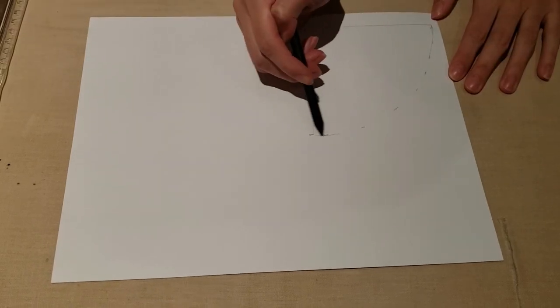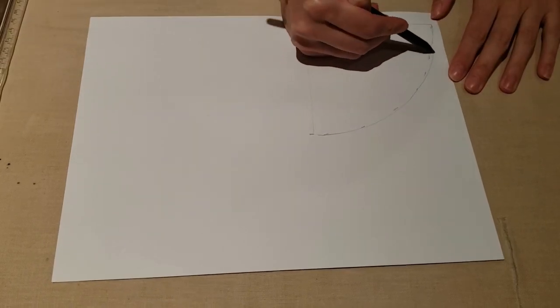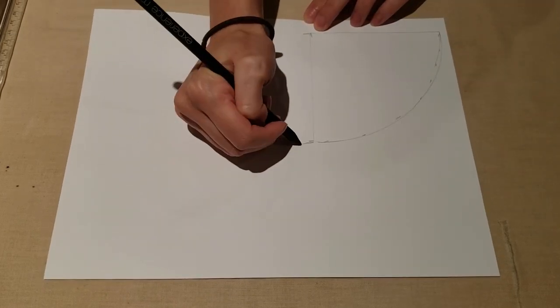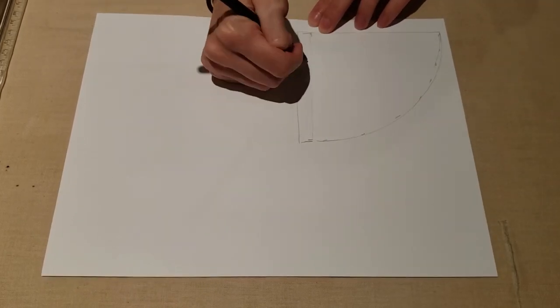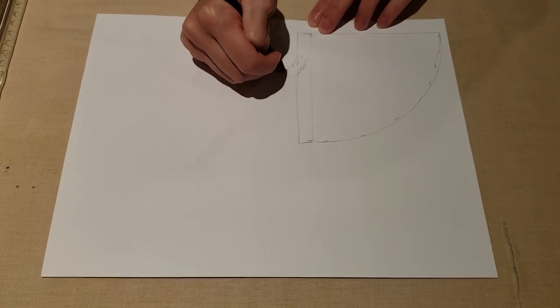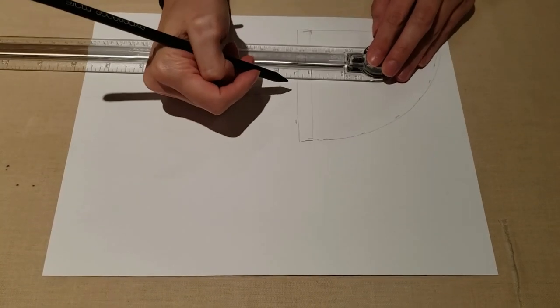Connect the dots to form a curved line. Then, to account for the amount of fabric that will be taken up by the seam, draw a line half an inch away from either of your two straight lines.